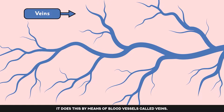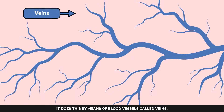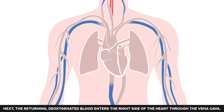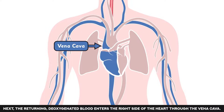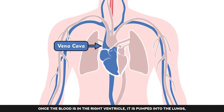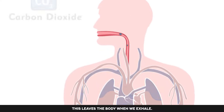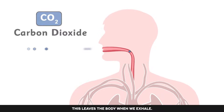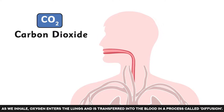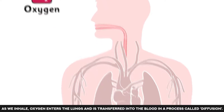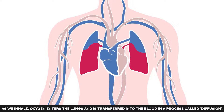It does this by means of blood vessels called veins. The returning deoxygenated blood enters the right side of the heart through the vena cava. Once the blood is in the right ventricle, it is pumped into the lungs, where the carbon dioxide is removed. This leaves the body when we exhale. As we inhale, oxygen enters the lungs and is transferred into the blood in a process called diffusion.